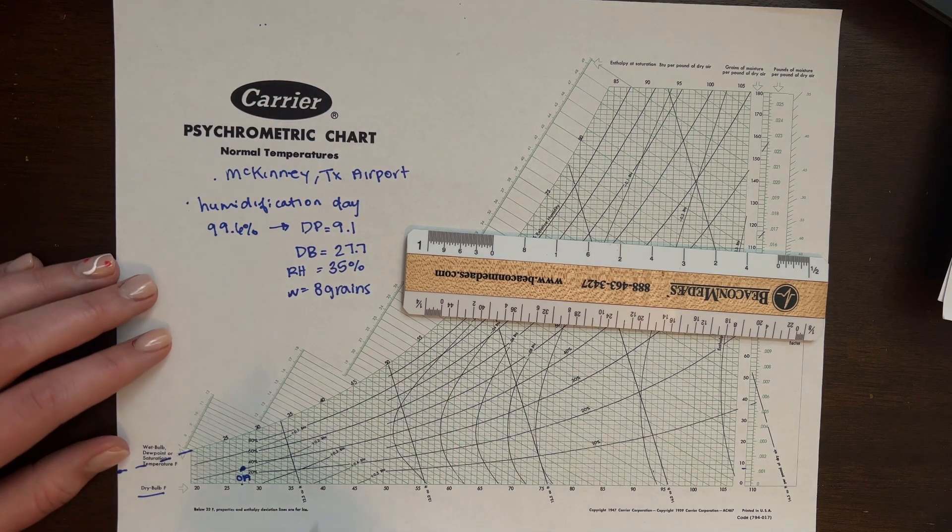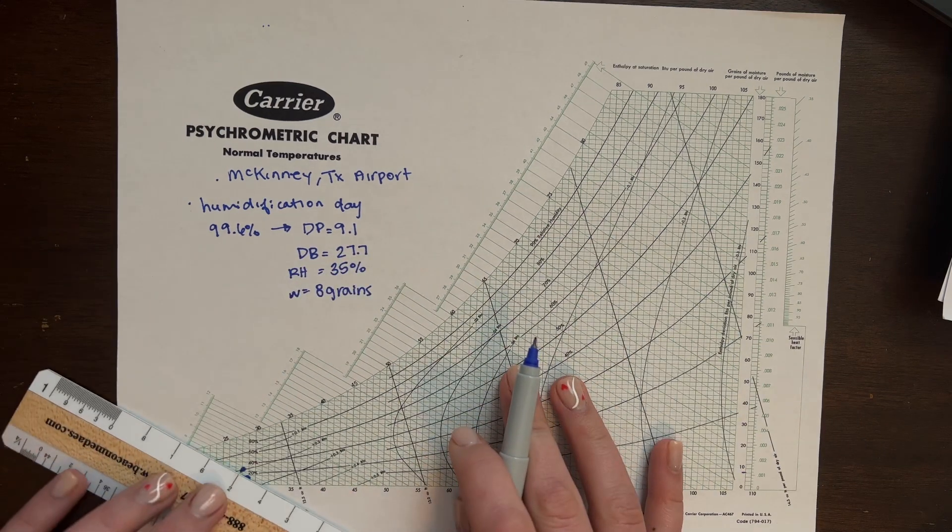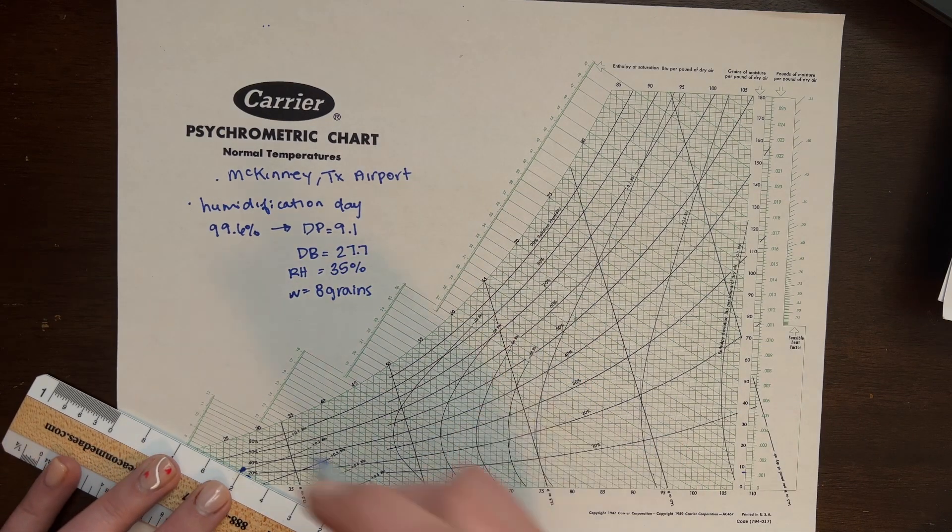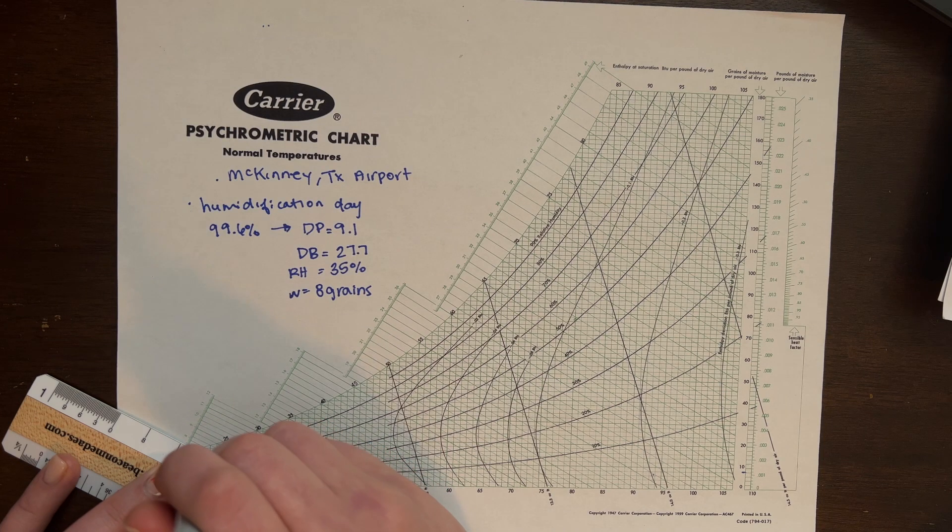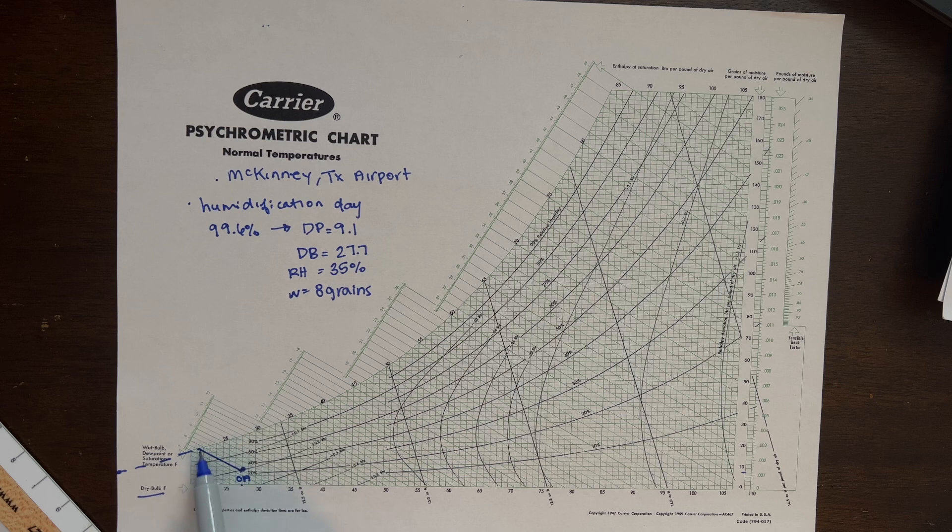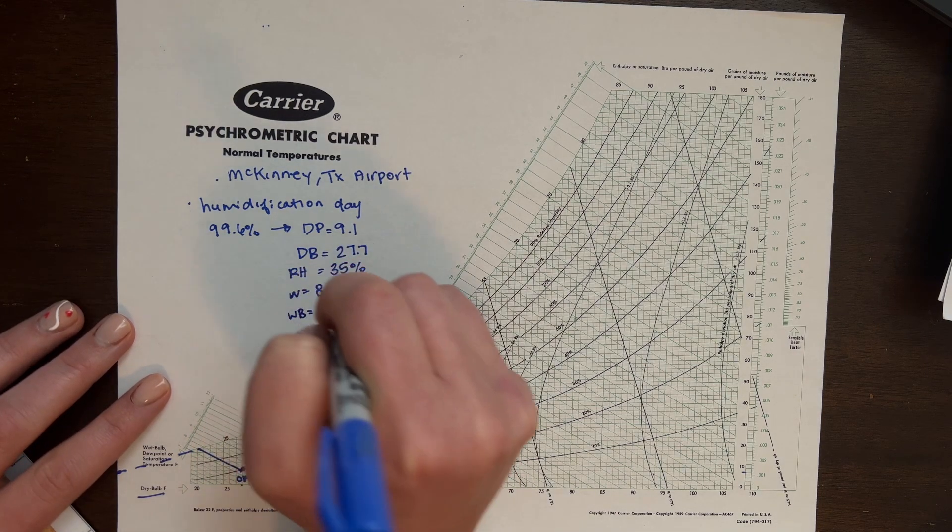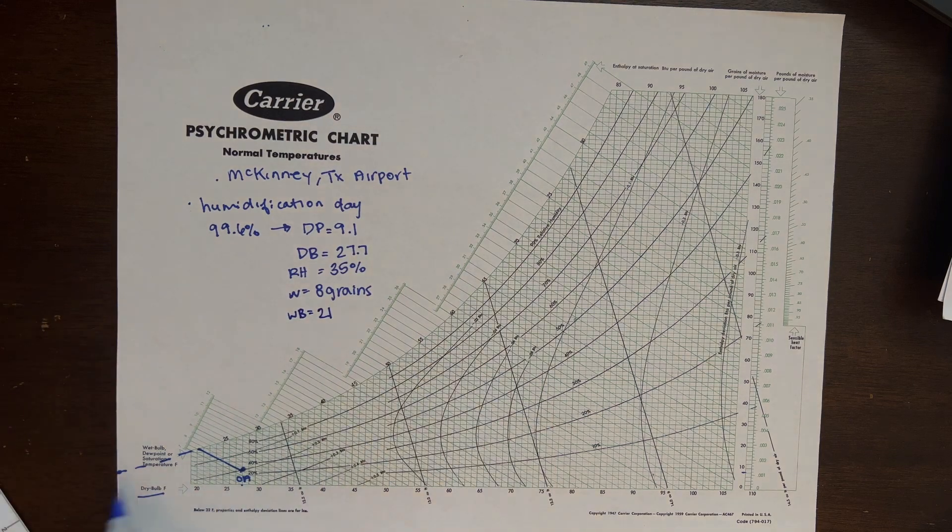And then we also, we can get our wet bulb. Again, it just goes along this line. That wet bulb is going to be about 25 or 21. We have a wet bulb of about 21. When you get down in these really cold regions, everything kind of mushes together, so to speak.